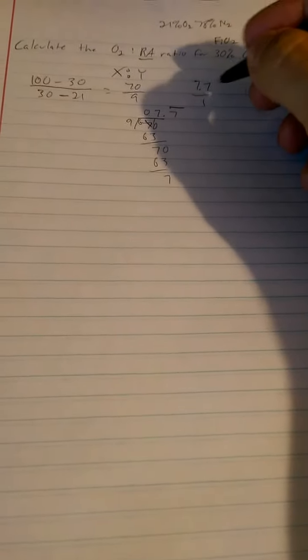It's going to be 63, you're going to get 7 again. Because of this you realize you're getting 7.7777, so the 7 is going to be repeated. This is one of the occasions where it's okay to round up. When you have 7.7 to 1, that's basically going to be equal to 8 to 1. That is your room air to oxygen ratio.